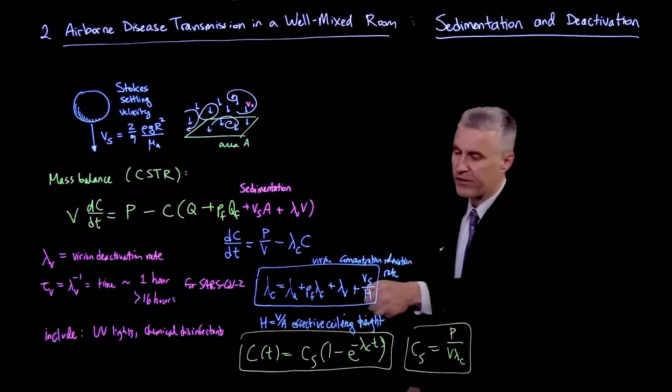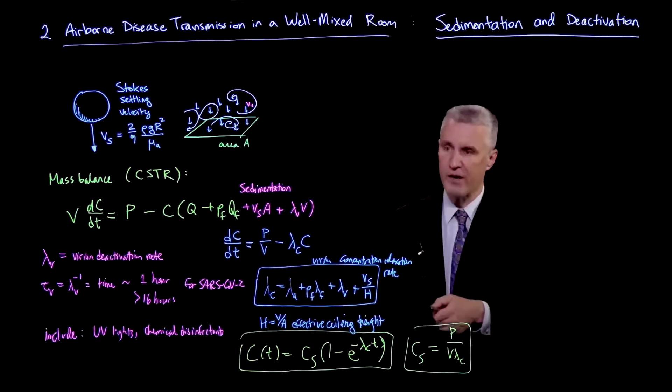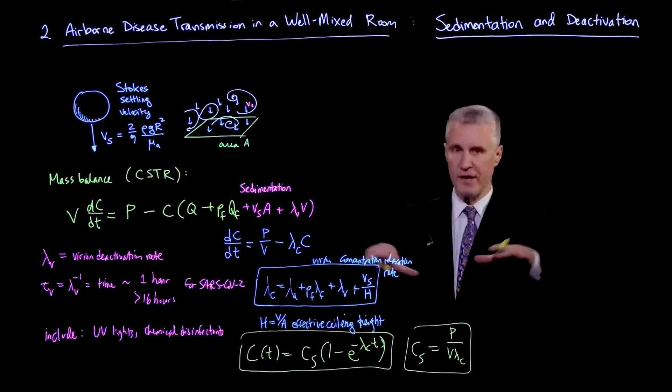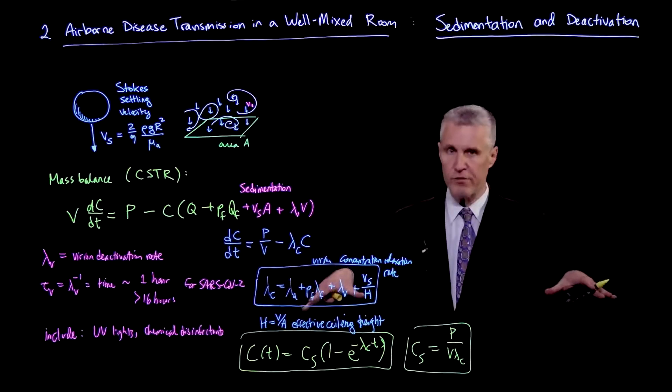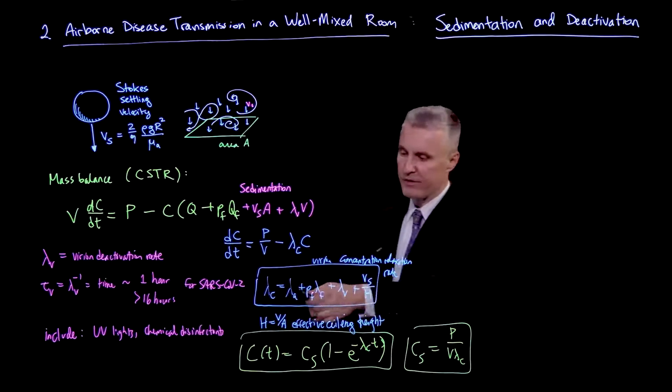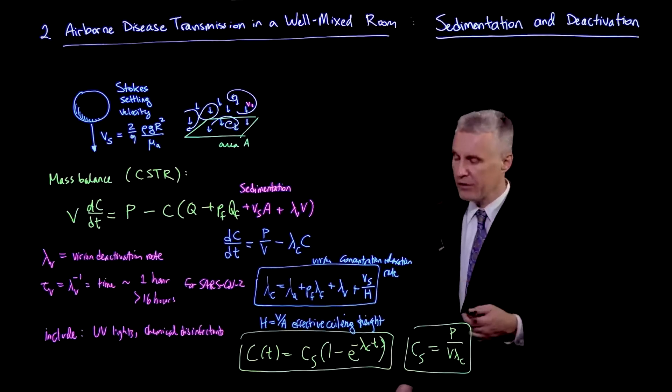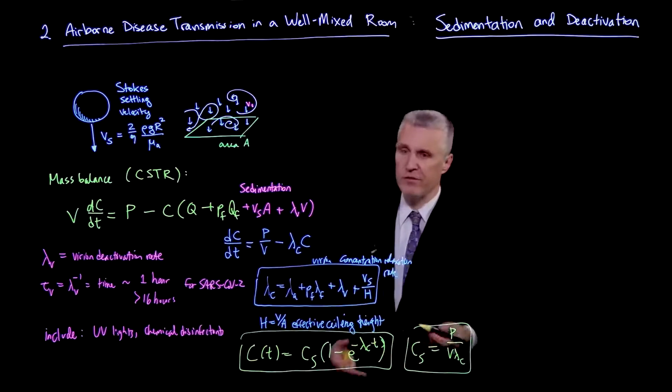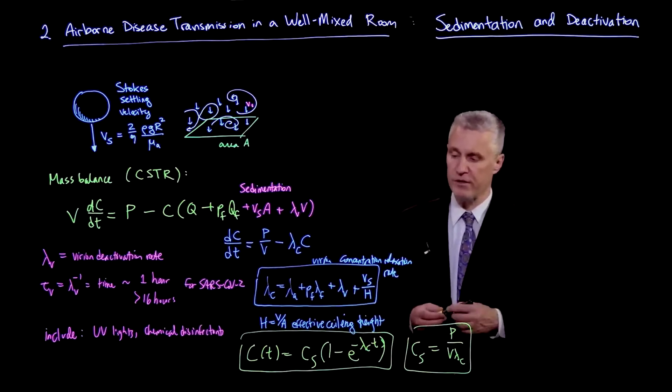And also, we know that Cs is P over V*lambda_C. So basically, if lambda_C is high, if all these removal rates are high, then that makes Cs low. So the background concentration in the room is much smaller if these lambda rates are all high.